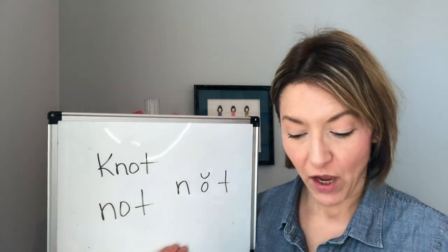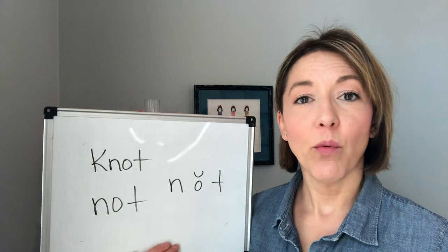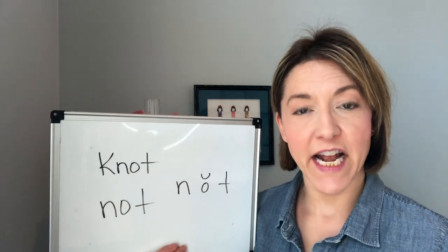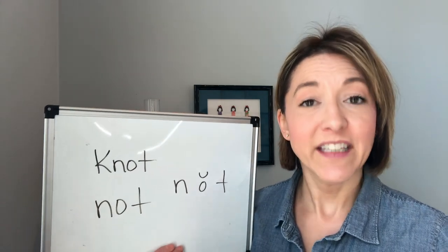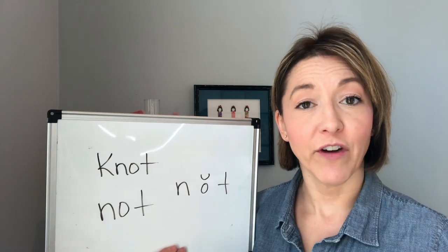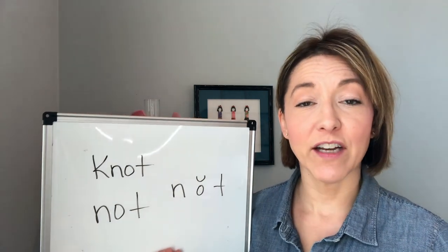To say these two words correctly, we're going to start with the N sound. To do this, the tip of your tongue is behind, touching the back of the top front teeth, and the air is going to move out of your nose.